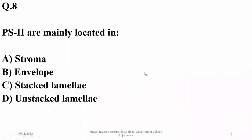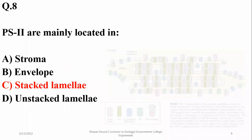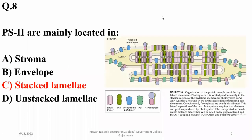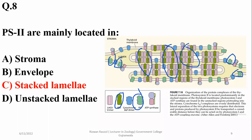Question eight: Photosystem two is mainly located in stacked lamellae. Photosystem one is found in stroma and unstacked lamellae. As you can see, photosystem two is located in stacked membranes of thylakoids, while photosystem one is in unstacked lamellae where it is relatively abundant. Right option after pass.